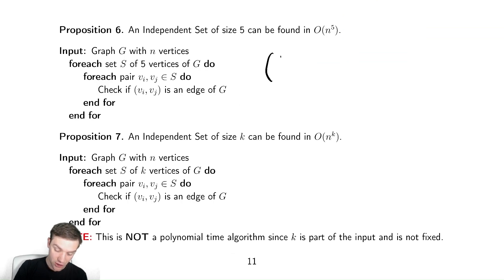There are n choose five possible sets, which is equal to n factorial over (n minus five) factorial over five factorial, and you can compute that if you want.